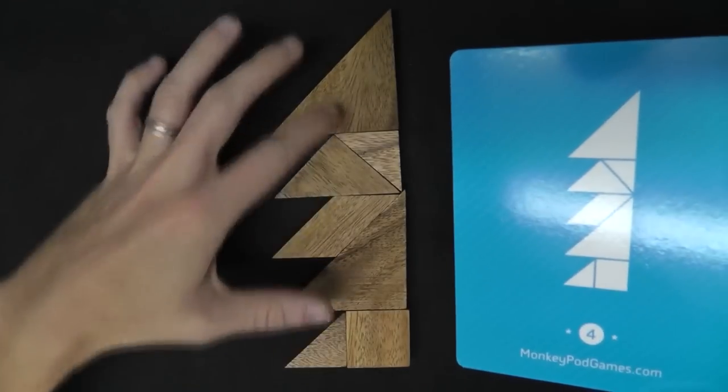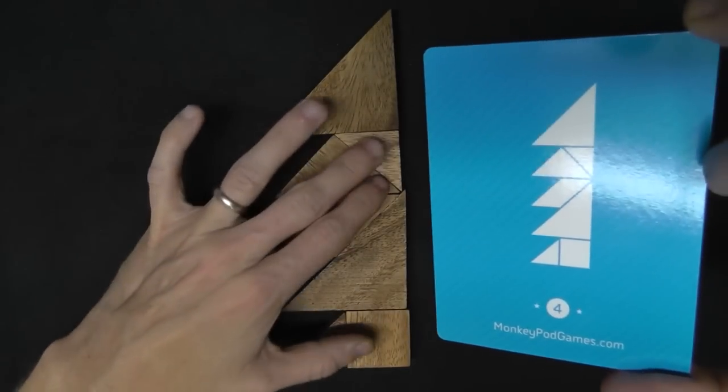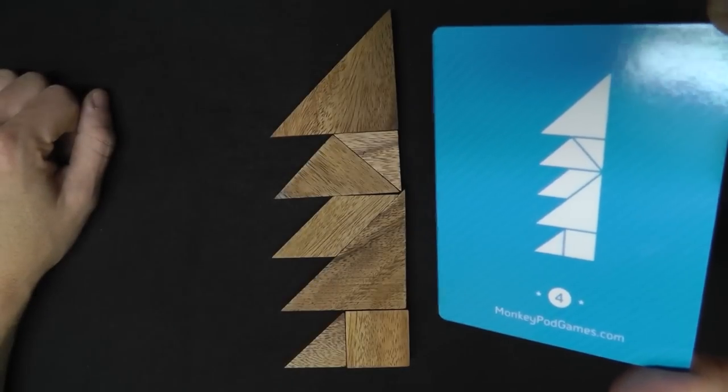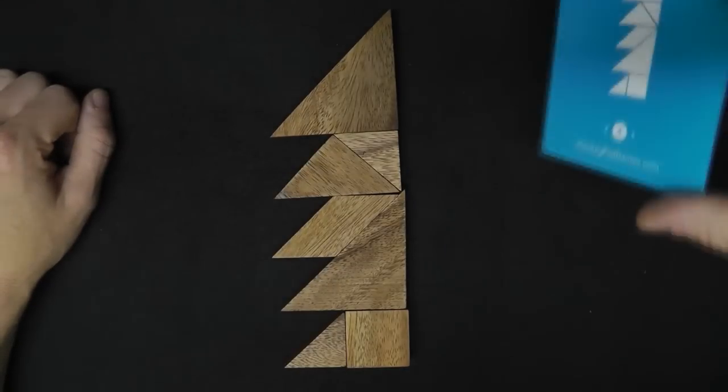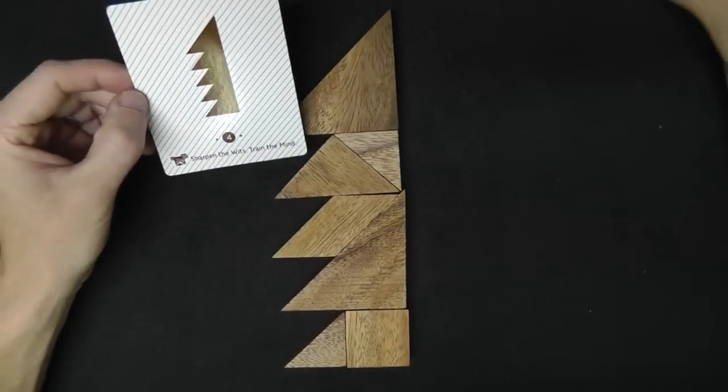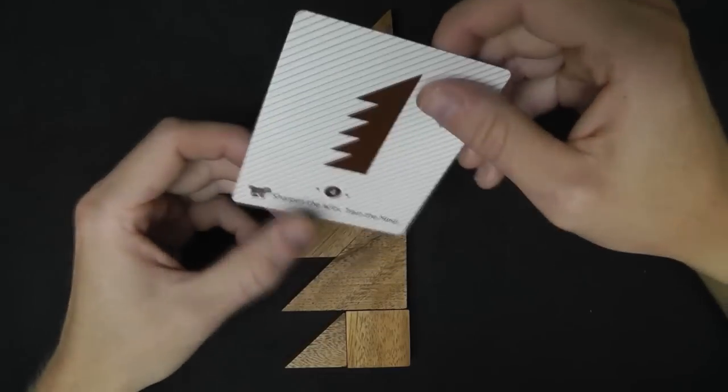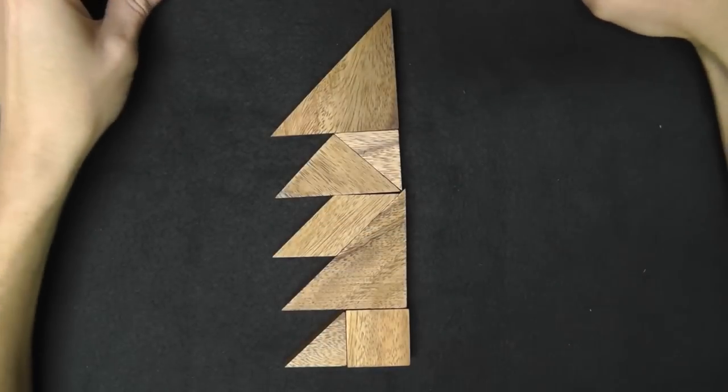So the only thing that's different here is this and this. So if we go like this, it's the same result. See, it's the same result. So you can have, you can make the same shape and the same silhouette with just a slight alternative in how the pieces are put together. But yeah, so that was number four. That was a little easier than I thought. Let's try another one.